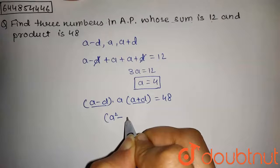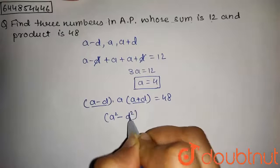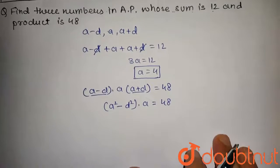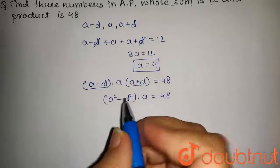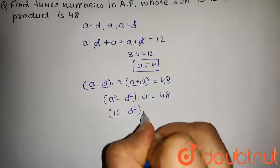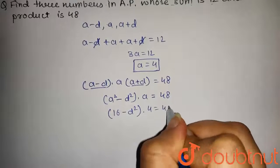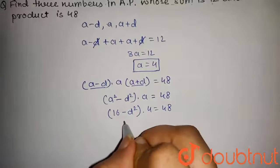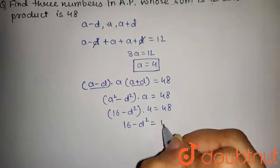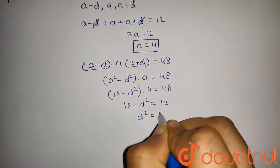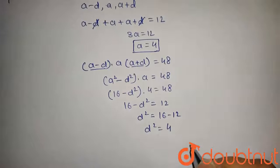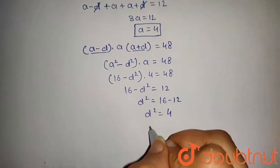Now we will put the value of a in this equation. So we get 4 squared, that is 16, 16 minus d squared into 4 equals 48. This will be 16 minus d squared equals 48 upon 4, that is 12. d squared will be equal to 16 minus 12, so d squared equals 4.